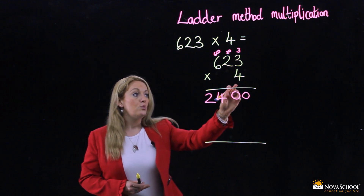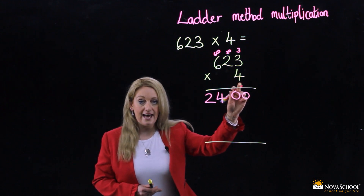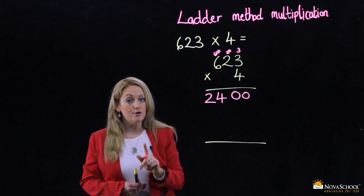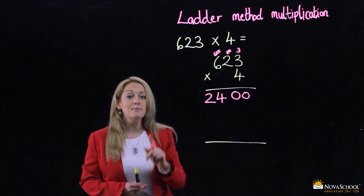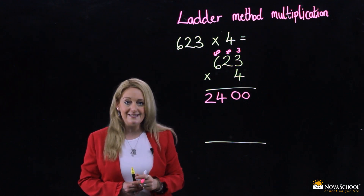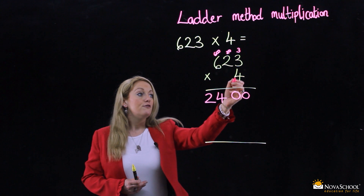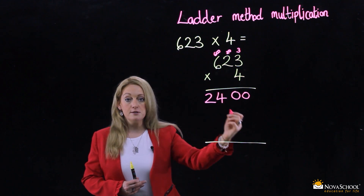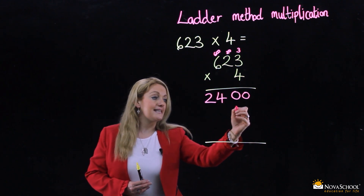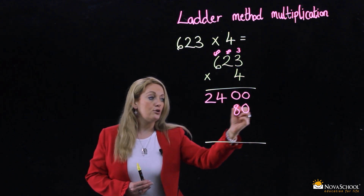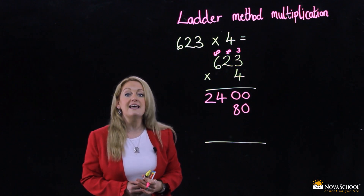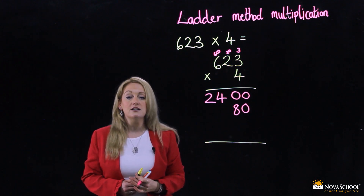Moving on. We take the 4 again and we multiply by 2. But remember, we're multiplying by 20. 4 multiplied by 20 is 80. Make sure you're writing your digits in the correct column.